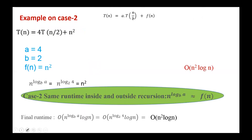Here we have an example on Case 2. With a = 4, b = 2, and f(n) = n², the recursion split function is n^(log_2(4)) = n². Since n² equals f(n), we have Case 2. The complexity in this case is the recursion split function multiplied by log n, which gives O(n² log n).